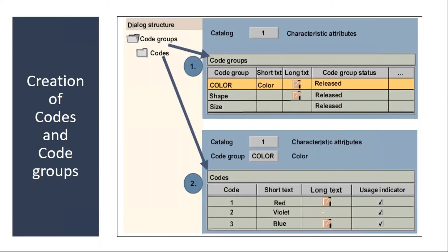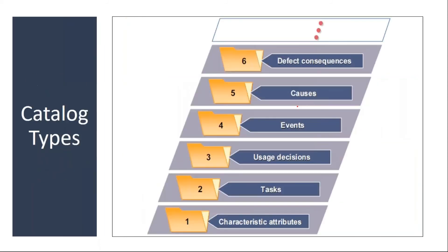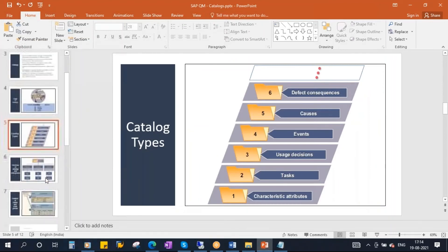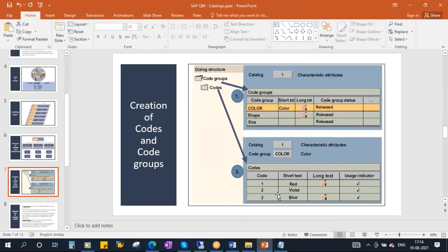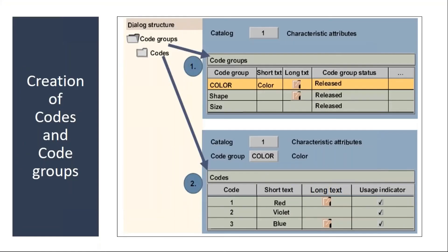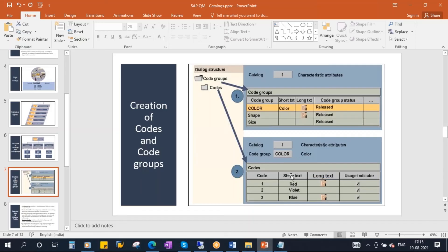Now let's create codes and code groups in the system. Today we are creating code groups with catalog type 'Characteristic Attribute.' You have to give the code group name, then select the code group, and under the folder called 'Codes' enter all the codes — the alphanumeric code and its short text. All these codes are clubbed into the code group, which belongs to catalog type one. Let's go to the system.